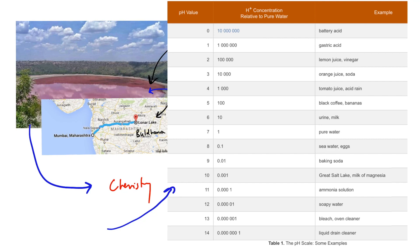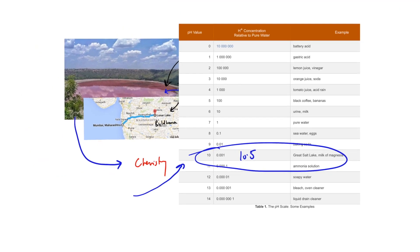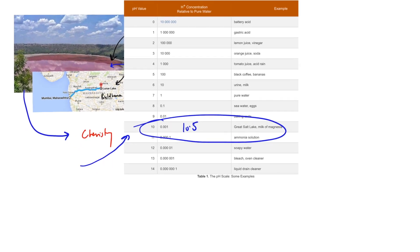Further looking into the chemistry, the pH level of Lonar Lake is around 10.5, and therefore the lake is alkaline with very high salinity. There is algal bloom present in these conditions.